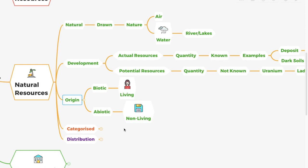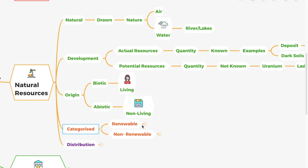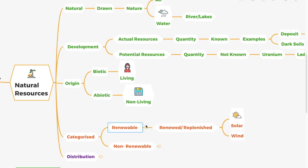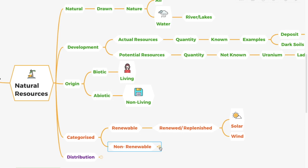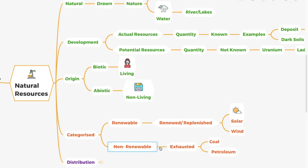Natural resources can also be broadly categorized into renewable and non-renewable. Renewable resources are those which get renewed or replenished, such as solar energy and wind. Non-renewable resources are those which have limited stock and can get exhausted, like coal and petroleum.